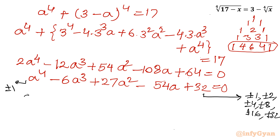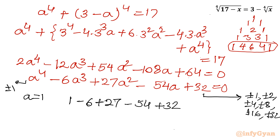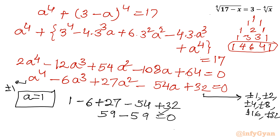Let me test a equal to 1: 1 minus 6 plus 27 minus 54 plus 32 equals 59 minus 59 which is 0. So a equal to 1 is a root. I will write the coefficients of the quartic equation — 1, minus 6, 27, minus 54, 32 — and apply synthetic division with a equal to 1.